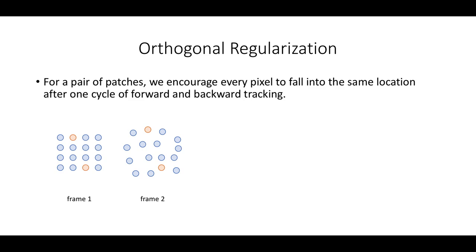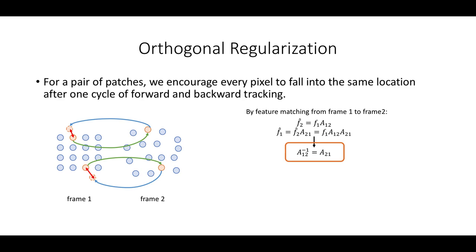We also propose the orthogonal regularization to encourage cycle consistency. Consider the orange pixel in frame 1. We can map it to frame 2 as shown by the green arrow, and then map them back to frame 1 as shown in the blue arrow. We constrain these pixels to fall into the same locations when mapped back to frame 1. Mathematically, we make use of the affinity matrix by matching features from frame 1 to 2 and then back to frame 1 again.